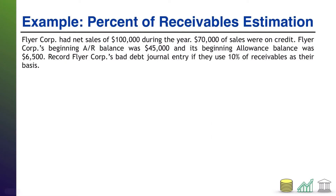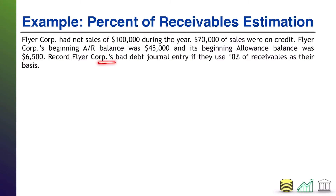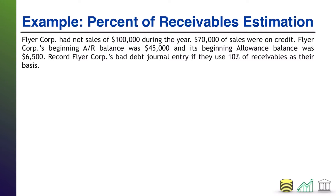Here's an example putting percent of receivables to work. Flyer Core had net sales of $100,000 during the year; $70,000 of the sales were on credit. Flyer Core's beginning AR balance was $45,000 and its beginning allowance balance was $6,500. We need to record Flyer Core's bad debt journal entry if 10% of receivables is their basis for bad debts.